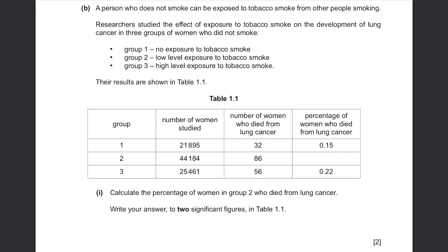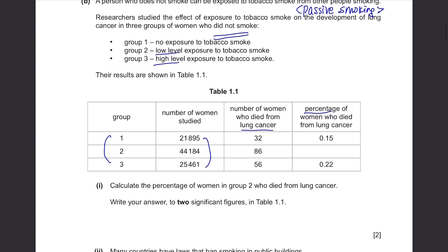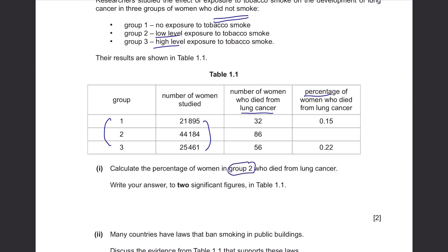Part B. A person who does not smoke can be exposed to tobacco smoke from other people smoking — this is called passive smoking. Researchers studied the effect of exposure to tobacco smoke on the development of lung cancer in three groups of women who did not smoke: Group 1 had no exposure, Group 2 had low-level exposure, and Group 3 had high-level exposure to tobacco smoke. The results are shown in Table 1.1, counting women who died from lung cancer. Calculate the percentage of women in Group 2 who died from lung cancer.